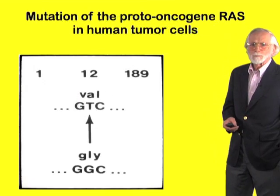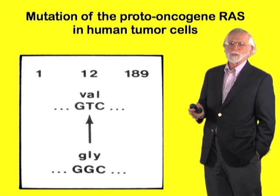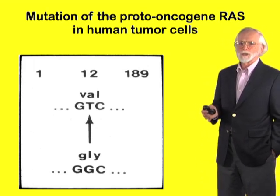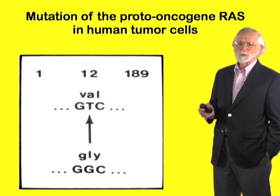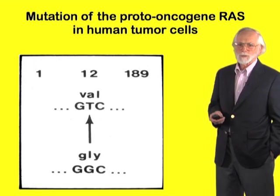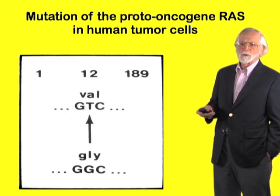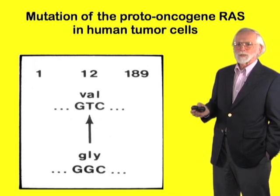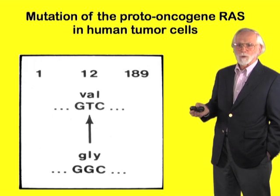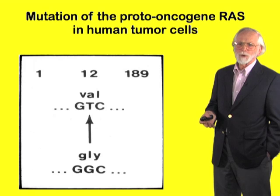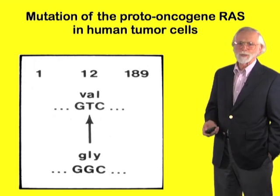Third, single-point mutations were discovered in another proto-oncogene known as RAS in human tumor cells. This point mutation converted the protein from a controlled state to an uncontrolled state, and the protein activity could now run rampant.